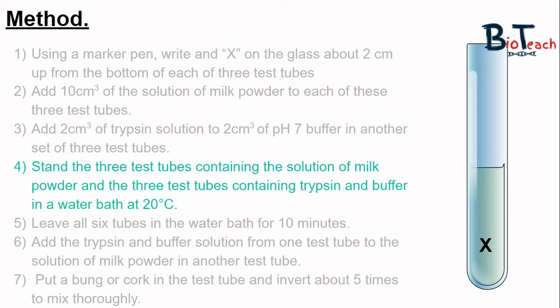Once we have our three test tubes with milk and the three with enzyme and buffer, we stand all six tubes in a water bath at a temperature of 20 degrees and leave them there for about 10 minutes so that the contents are all the same temperature. Your teacher might ask you to pool your results as a class so that's just something to be aware of.